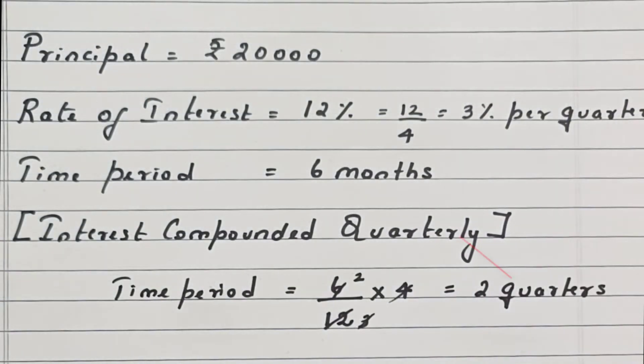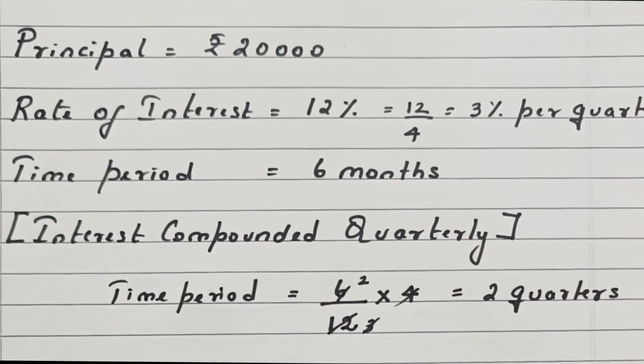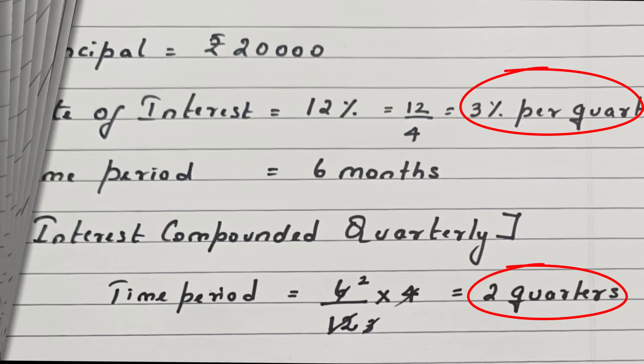Two quarters is equal to the 6 months which has been given under time period. Now that we have converted the time period and the rate of interest, let's calculate the amount. Amount is calculated using the formula: A = P(1 + r/100)^n.